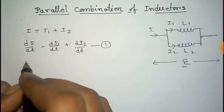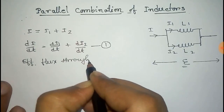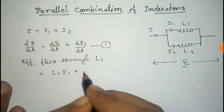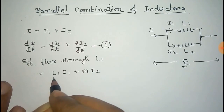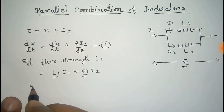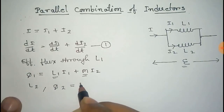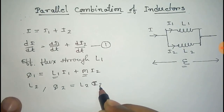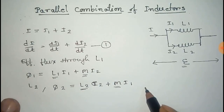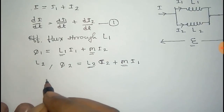The total effective flux through L1 is phi1, equal to L1·i1 plus M·i2, where L1 is the self inductance of the first inductor and M is the mutual inductance. Similarly, for L2, phi2 is equal to L2·i2 plus M·i1, where L2 is the self inductance and M is the mutual inductance.